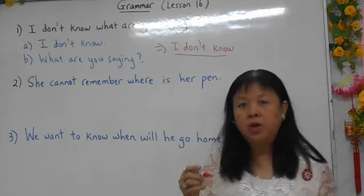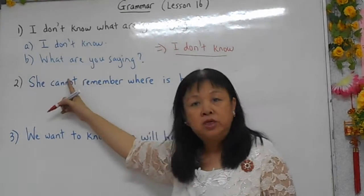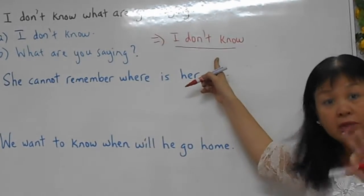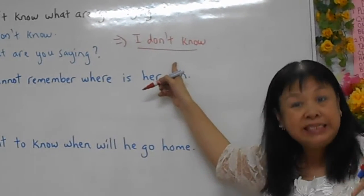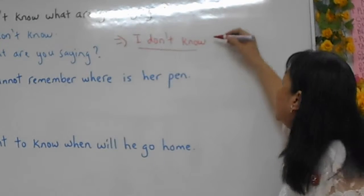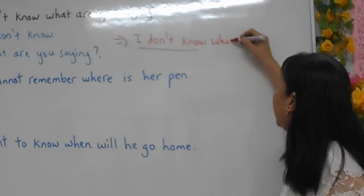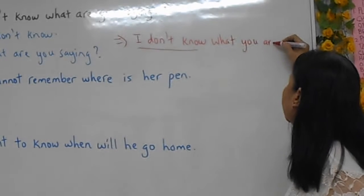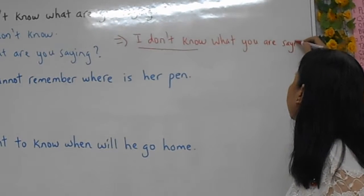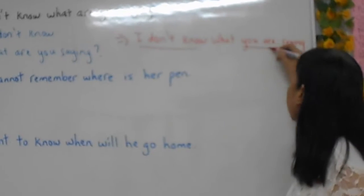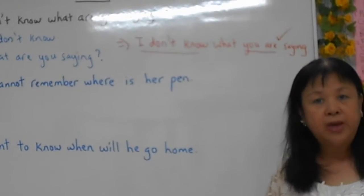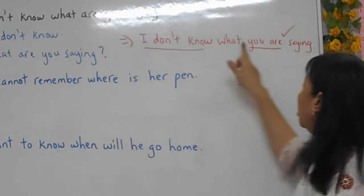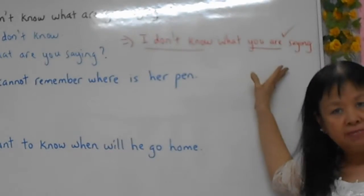You know that when we use a question, we say 'What are you?' But now I'm using it not as a question, but as a sentence, as a statement. So in that case, I will say 'what you are saying.' This is the correct way. So 'are you' is a question, and 'you are' is a statement. Because I start with a statement.